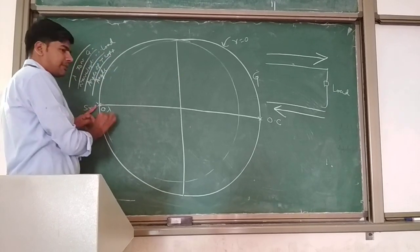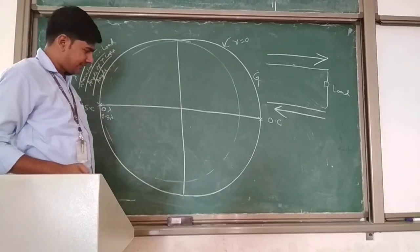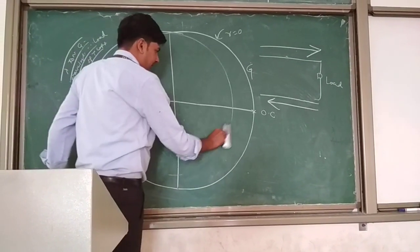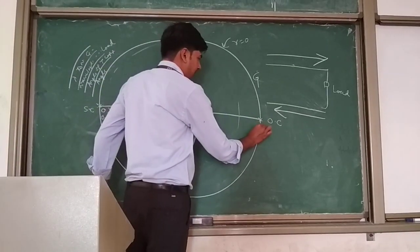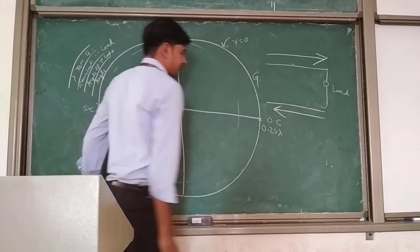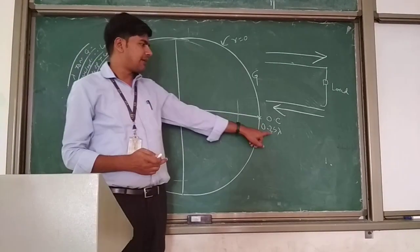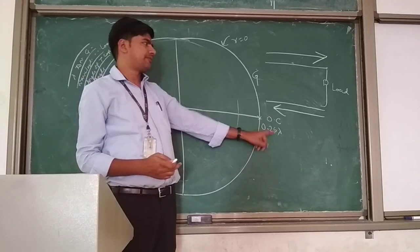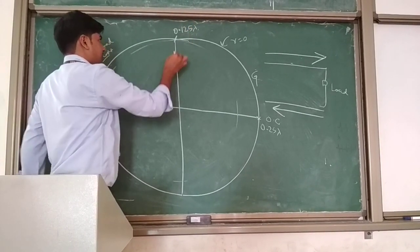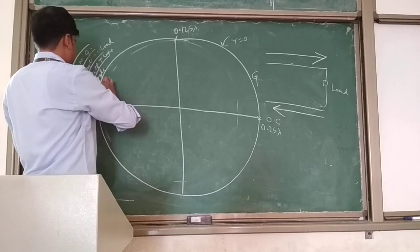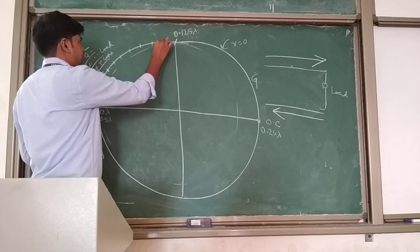If you complete one more circuit then this will become 1 lambda. Right now we are going to concentrate on one circuit movement. This is 0 lambda, and obviously this will be 0.25 lambda at the halfway point. A complete circle is lambda by 2, so a half circle will be lambda by 4, that is 0.25 lambda. Half of that will be 0.125 lambda. Similarly you can write different values for the scale.